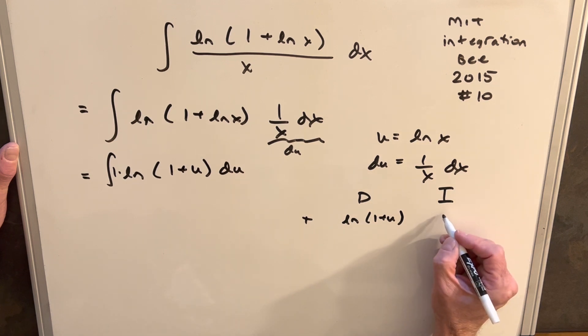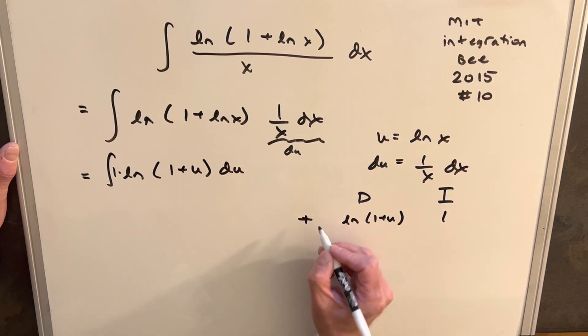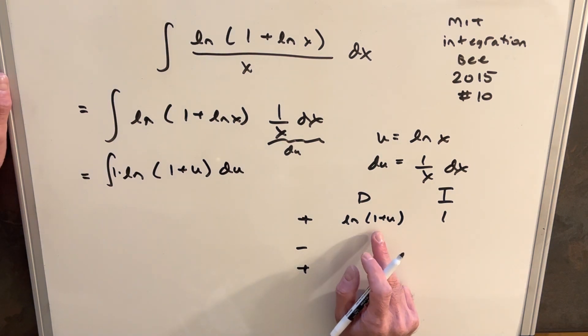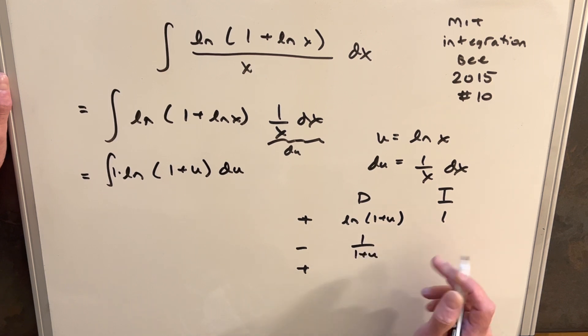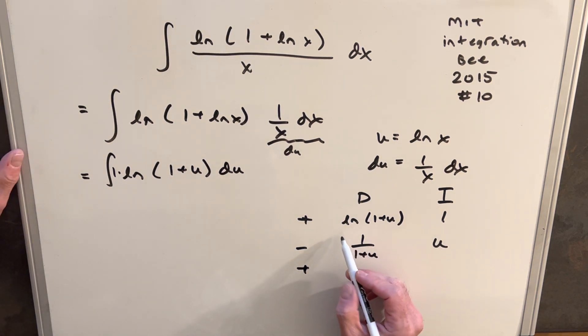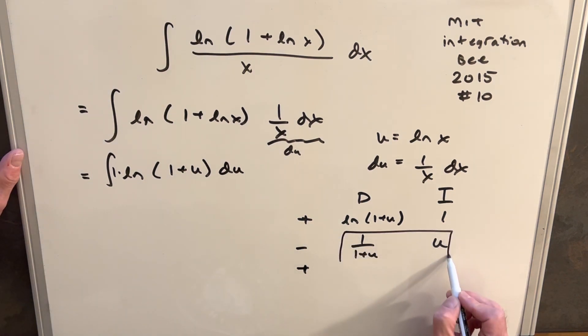And then we'll integrate our 1. And then here, in this column, we're just going to have alternating signs. So then if we take our derivative of ln of 1 plus u, this is going to be 1 over 1 plus u. And then our integral of 1 is going to be just u. We can keep going, but this is an integral that we can do right here. So let's stop.